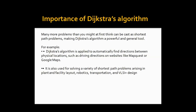Many more problems than you might at first think can be cast as shortest path problems, making Dijkstra's Algorithm a powerful and general tool. For example, Dijkstra's Algorithm is applied to automatically find directions between physical locations, such as driving directions on websites like MapQuest or Google Maps. A great example is using the app Waze, which gives you the shortest route to your destination. It is also used for solving shortest path problems in plant and facility layout, robotics, transportation, and VLSI — very large scale integrated design.